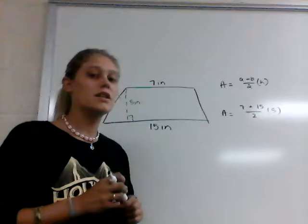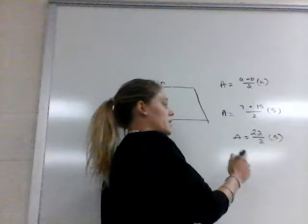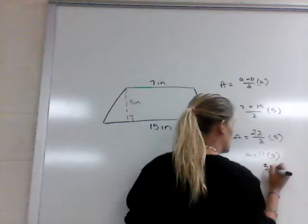When we add 7 and 15 we get 22. Dividing by 2 gives us 11. So now we have 11 times 5, and that is 55.